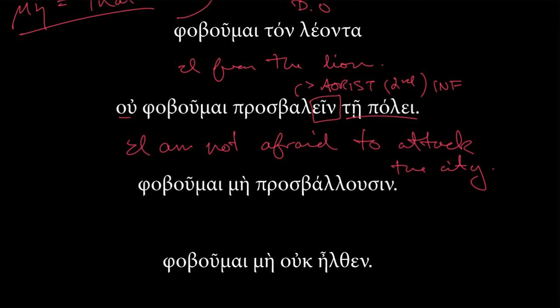To what? προσβαλεῖν. But no, given where this accent is, and that this is a one lambda, this is the aorist infinitive. The strong, second aorist infinitive. So, I am not afraid to attack, simply, once, the city. And remember that προσβάλλω takes a dative object. That's why we have τῇ πόλει in the dative.